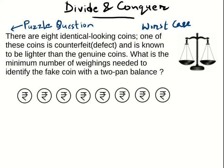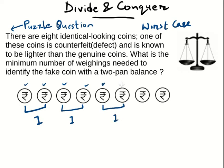One approach is to take the first two coins and weigh them — that is one weighing. In the worst case they are equal, meaning both are genuine. Then take the next two coins — one more weighing — and they are equal again. Then weigh the next two — they are equal. Now one of the remaining two must be fake, so one more weighing. That gives us one plus one plus one plus one — four weighings total to guarantee finding the fake coin.